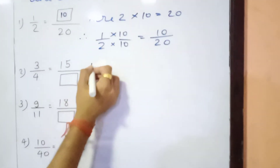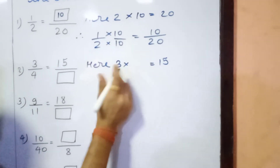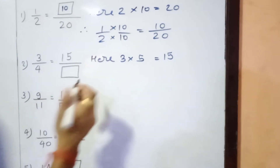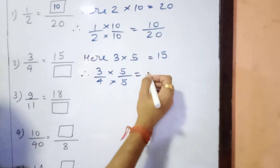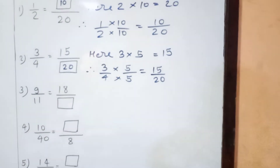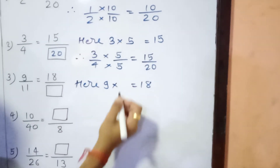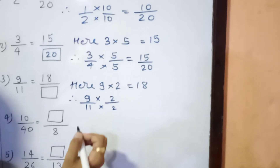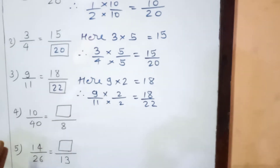For the second one, 3 multiplied by which number gives 15? 3 times 5 is 15. If 3 is multiplied by 5, we must multiply 4 by 5 as well. So 3 upon 4, with both numerator and denominator multiplied by 5, gives us 15 upon 20. The number that goes in the box is 20.